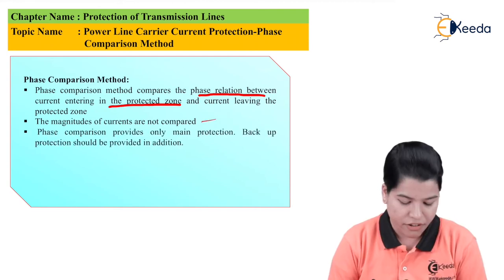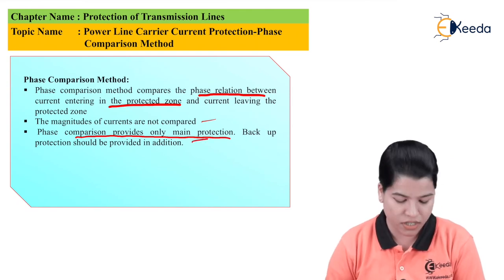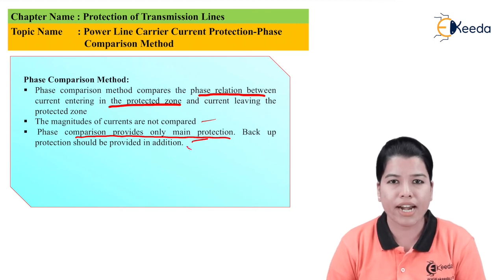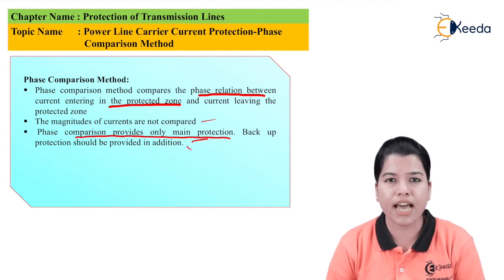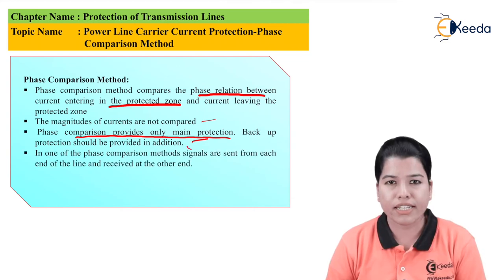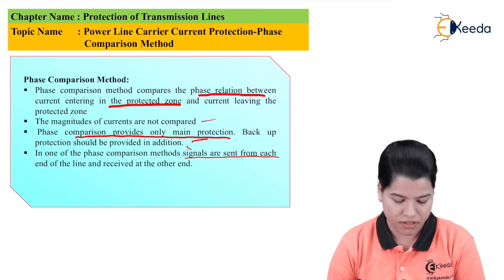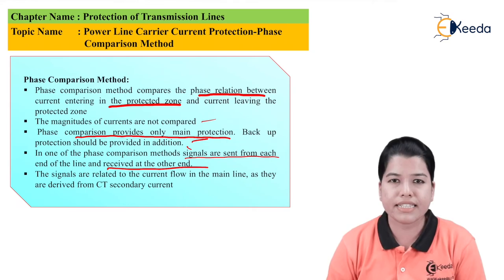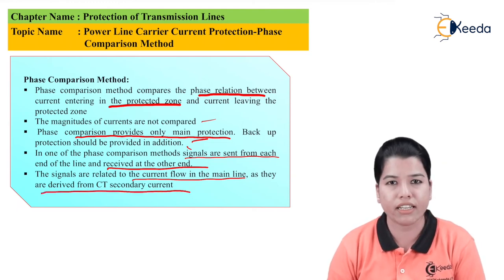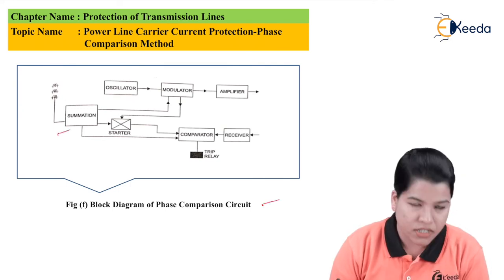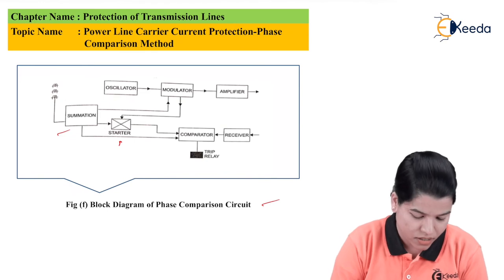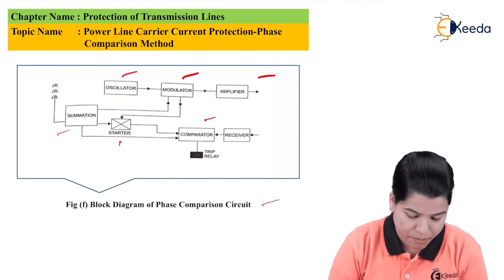It is basically required that the current entering the transmission line or the protected zone should be equal to the current leaving the protected zone under normal operating conditions. But when a fault occurs, the two currents are different. In the phase comparison method, signals are sent from each end of the line and received at the other end. These signals are related to the current flow in the main line as they are derived from the CT secondary current. The block diagram for the phase comparison unit shows: summation amplifier, starter, oscillator, modulator, amplifier, comparator, receiver, and trip relay.